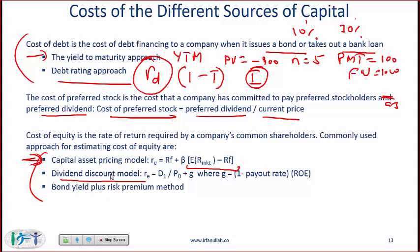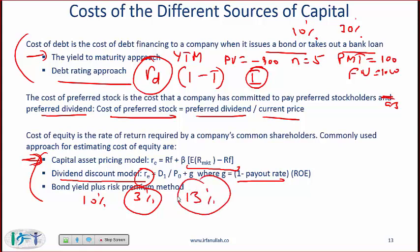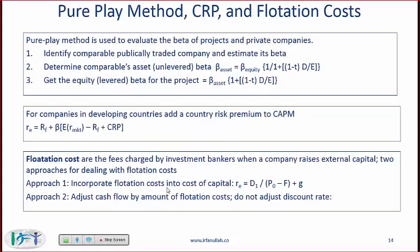The dividend discount model works in efficient markets: if you assume the stock is fairly priced, the cost of equity is D1 / P0 + G, where G (the long-term sustainable growth rate) equals the retention ratio multiplied by ROE, and the retention ratio equals 1 minus the payout ratio. The third method is bond yield plus risk premium: if the YTM on the company's bond is 10% and equity deserves a 3% premium, then the cost of equity is 13%.